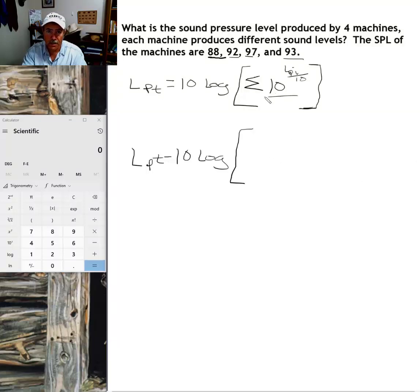Okay, 10 is a constant, it's always going to be there. And now I'm going to rewrite everything in the brackets. I'm going to lose the summation operator. I'm going to write down each of the individual terms that we're adding up. The first term that will be added to others is 10 to the 88 divided by 10th power. So we have 10 and then a fractional exponent, L P I, 88 divided by 10.